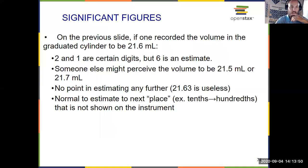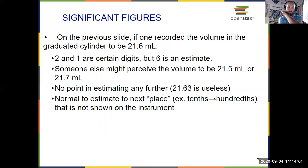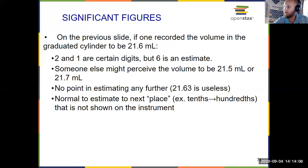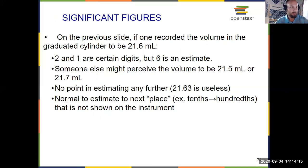That ties into the world of significant figures. The 2 and 1 are certain, because we knew it was more than 21 and less than 22. The 6 was an estimate, but I'm not going to go any further than that. If I said 21.6284, you clearly can't even tell if it's 0.5, 0.6, or 0.7 — you don't go any further. We estimate just one next digit.